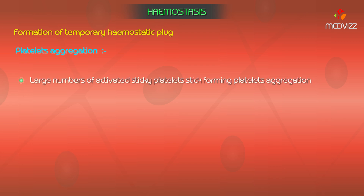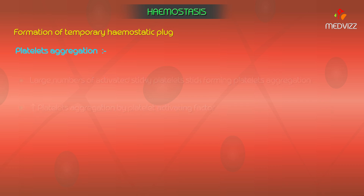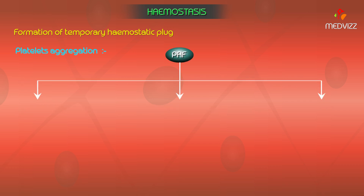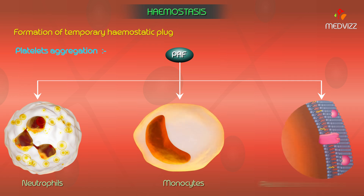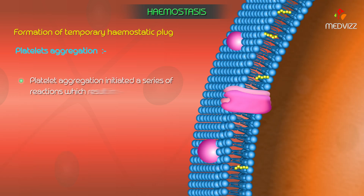Platelet aggregation: the large numbers of activated, sticky platelets stick together, forming platelet aggregation. Platelet aggregation is also increased by platelet activating factor, a cytokine secreted by neutrophils, monocytes, and platelet cell membrane lipids. Platelet aggregation initiates a series of reactions resulting in the formation of thromboxane A2 and prostacyclin from the platelet membrane phospholipids.